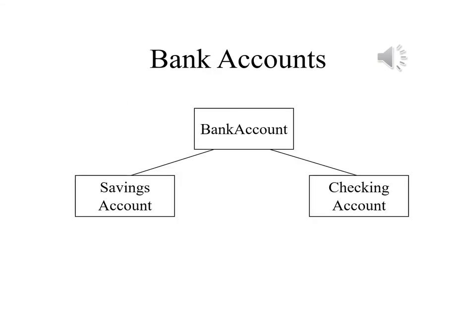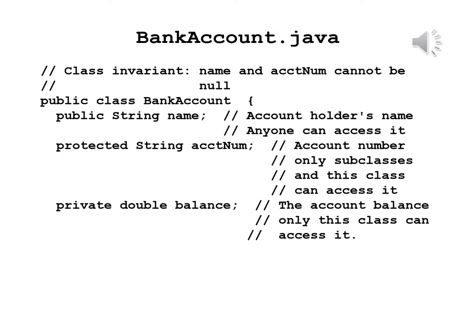We are going to look at another example of a base class that also has two derived classes. The base class in this case is called BankAccount. There will also be two derived classes: SavingsAccount and CheckingAccount. Some of the information in a bank account will always be there, no matter what kind of account it is — the name of the depositor, there may be an account number, there may be a balance. Other information may be unique to each of the derived classes. BankAccount has three properties: private String name for the depositor's name, protected String accountNumber, and private double balance.